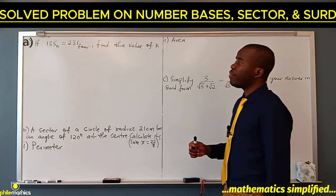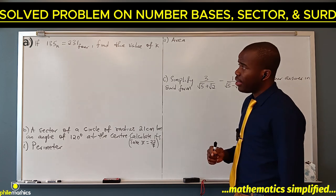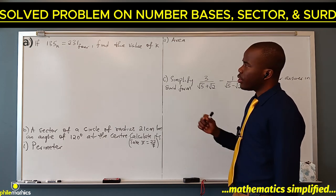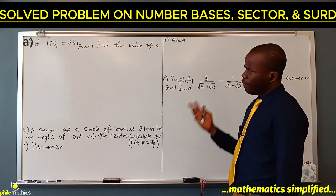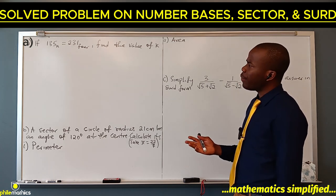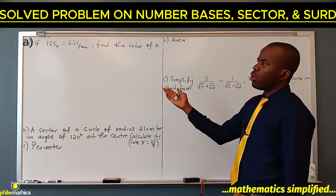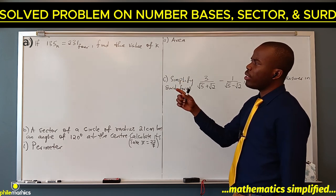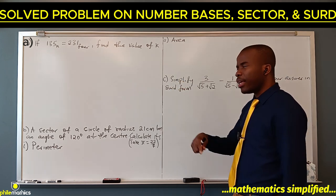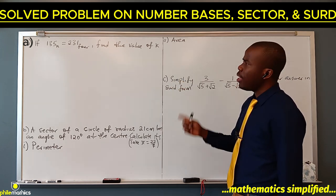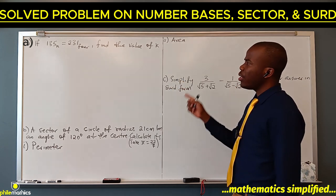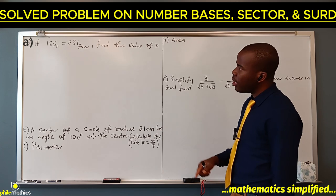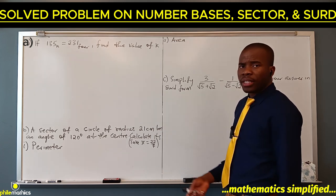If 135 base k equals 231 base 4, find the value of k. What we have to do is convert 135 in base k to base 10, and 231 in base 4 to base 10, then find what k is.